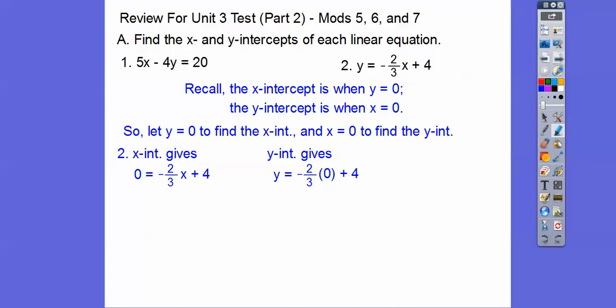Let's try number 2. Same thing. Let x be 0 for the y-intercept, and let y be 0 for the x-intercept. And then just solve for the other variable. So this guy over here, to get x by itself, I added 2 thirds x to both sides.